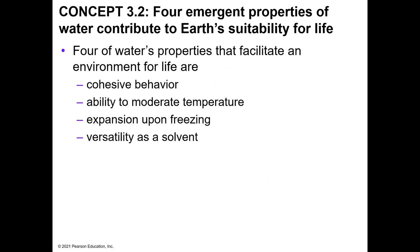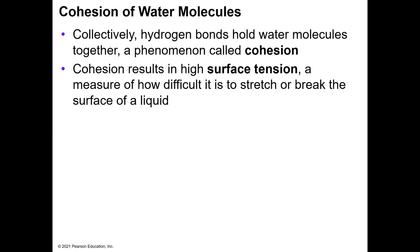Because of the unique properties of the water molecule and its polar nature, there are four emergent properties that exist with water and allow for the unique nature of biological life to evolve on the planet. The first thing we're going to cover is cohesion of water molecules. Collectively, all of the hydrogen bonds that water molecules have together is called cohesion, and this cohesive force results in a high surface tension.